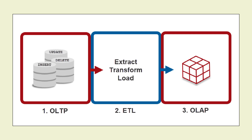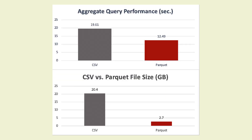OLAP and OLTP are important concepts in data engineering, and you can expect an explainer video soon on this topic. Because of the data compression facility in Parquet, you can easily fetch column data values using queries, giving you more relative speed of query execution compared to the operating speed of CSV files.